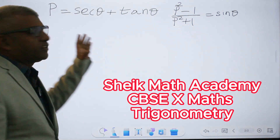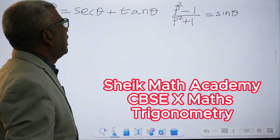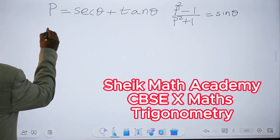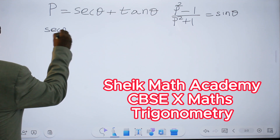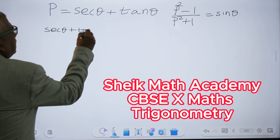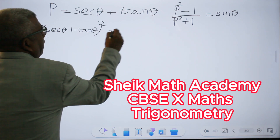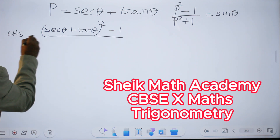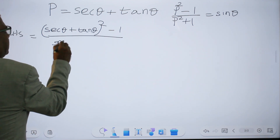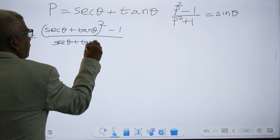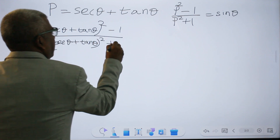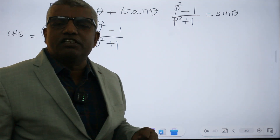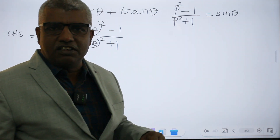P is equal to secant θ plus tan θ. They have already given P squared, so we just square it. Substituting secant θ plus tan θ instead of P, the left-hand side becomes secant θ plus tan θ squared, minus 1, divided by secant θ plus tan θ squared, plus 1. Now, A plus B whole squared is A squared plus B squared plus 2AB.